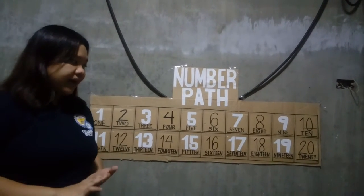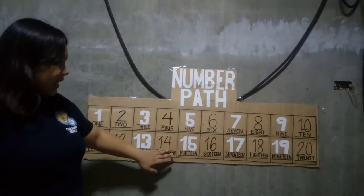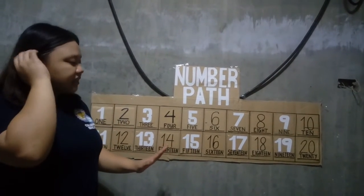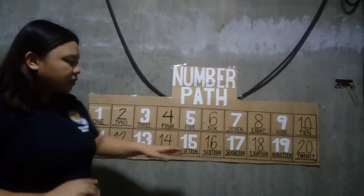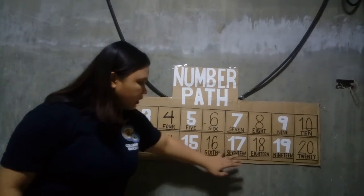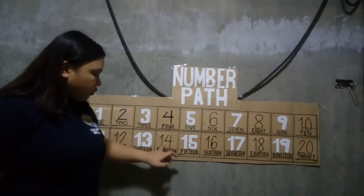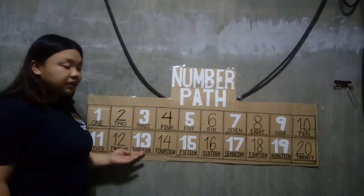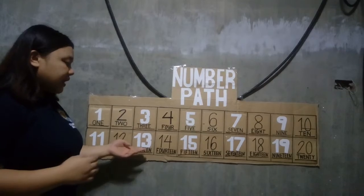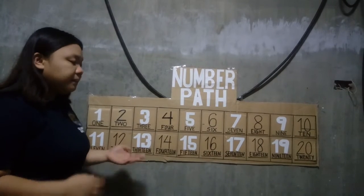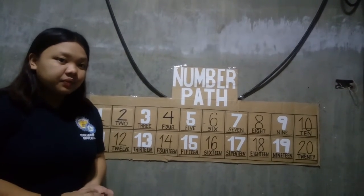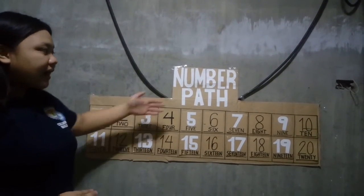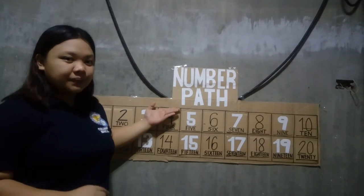Another example is 18 minus 5. Let's count backward 5 times to get the answer. From 18: 1, 2, 3, 4, 5 — and we end up at number 13, which is the answer to 18 minus 5, which is basically correct and also accurate in using the numbered path.